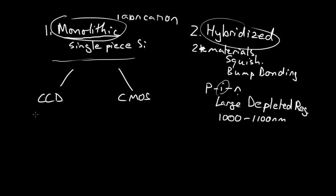What is CCD? Well, CCD is, and I'm going to draw out the architecture later, charge-coupled device. And CMOS is, this is a big piece to write out, complementary metal oxide semiconductor.